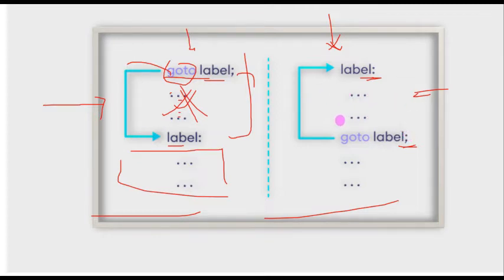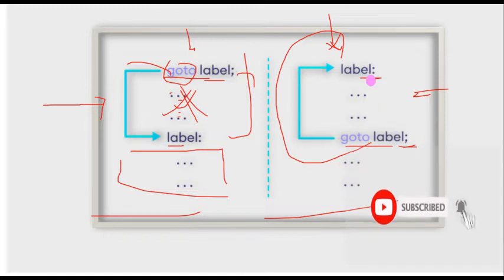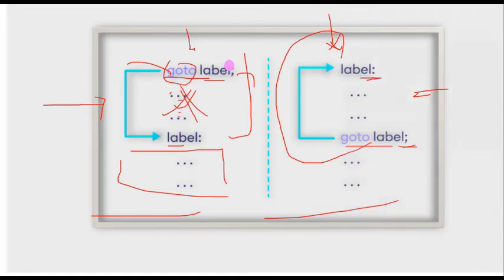The statements are executed line by line, then when it reaches the goto instruction, it automatically jumps from here to here. We call this backward. So you can implement the goto instruction for C++ either as this one for forward or this one for a backward jump.